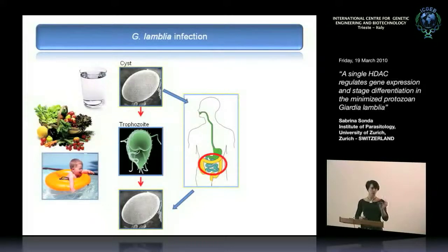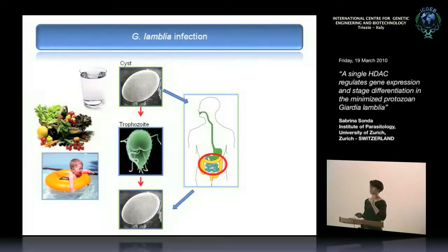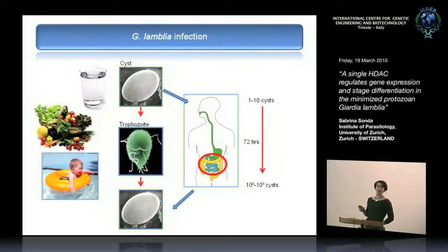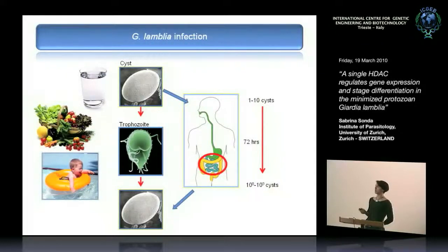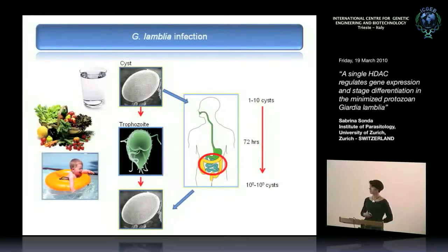The key word for this parasite is economy and simplicity, seen both in the cell cycle and in cellular and metabolic processes. To give you an idea of its power: only one or two cysts are enough to initiate infection. The time from acquiring a cyst to releasing new cysts is 72 hours — pretty fast. And the number of cysts released is from 10^8 to 10^9, so you can imagine the power of infection and disease spread.